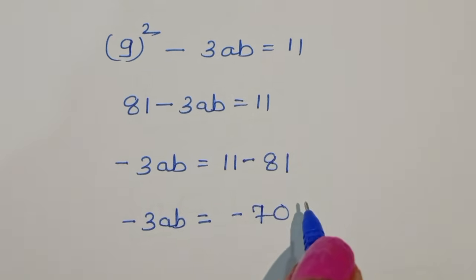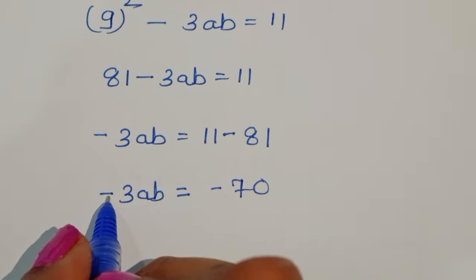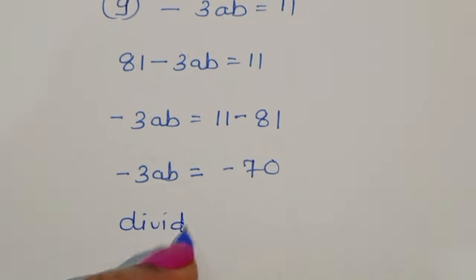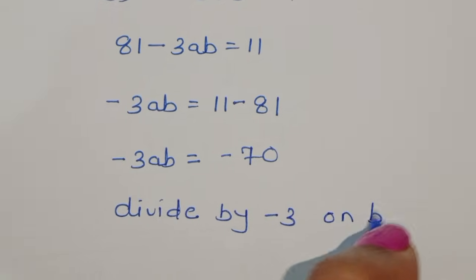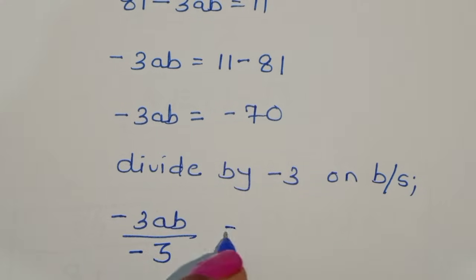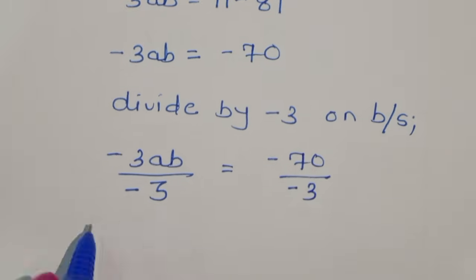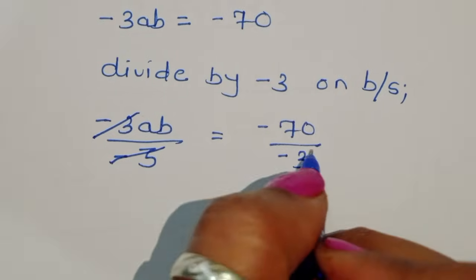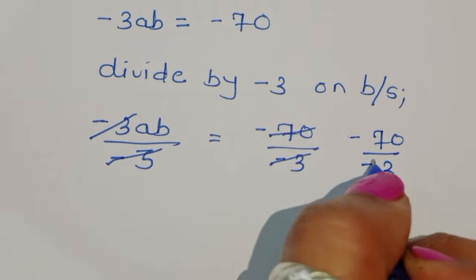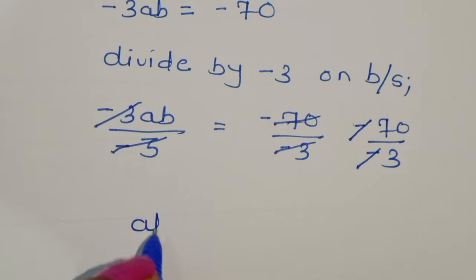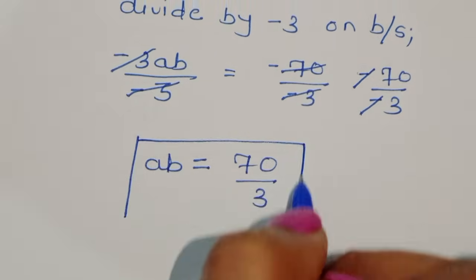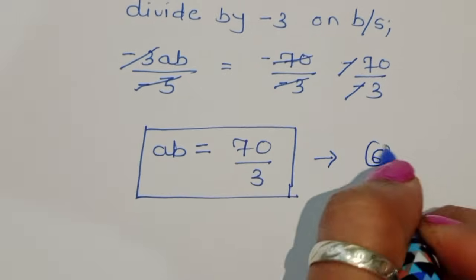We divide both sides by minus 3. So minus 3ab divided by minus 3 equals minus 70 divided by minus 3. The minus signs cancel, so we get ab equals 70 divided by 3. This is equation number 6.